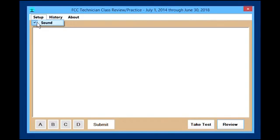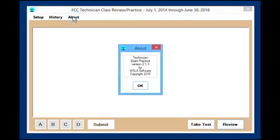Under setup, you have a choice of turning sound on or off. This is when you give your answers whether you get a sound as to whether you are correct or incorrect. Under history, you can view history of previous tests that you have taken or clear previous history. I'll show you more about that later. And you can click on About and see what version of the program you're running.